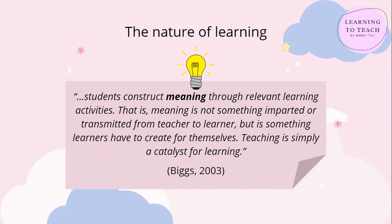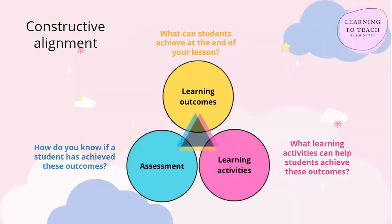This means that the role of the teacher is not to impart or transmit knowledge, but to be a catalyst who designs learning opportunities. Now that we are on the same page about learning, let's look at constructive alignment. Constructive alignment is a model proposed by Professor John Biggs where we align learning outcomes, teaching and learning activities, and assessment tasks. This model can be applied when designing a programme, a subject, or a lesson.